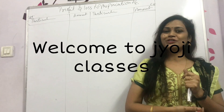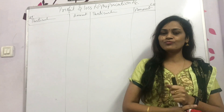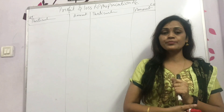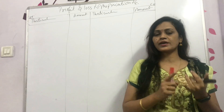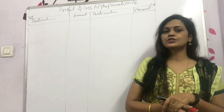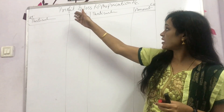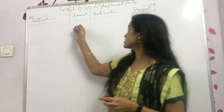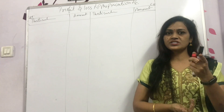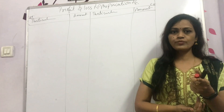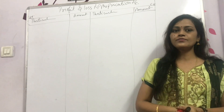Welcome to the UG classes. Today we are solving problems on profit and loss appropriation account — one on guarantee of profit and one on the profit and loss appropriation account. The format is already given; if you want, check the link in the description to see the format. Now we are directly solving the problem here.